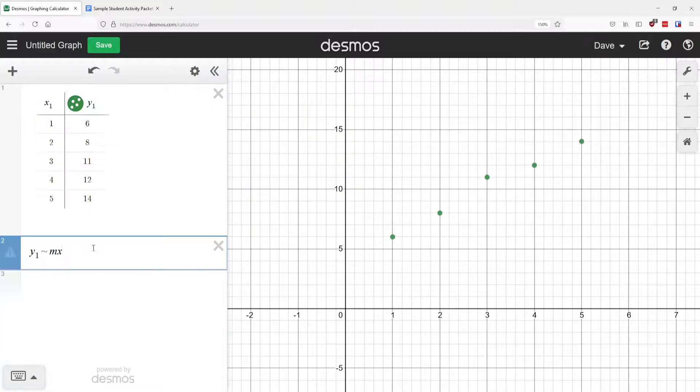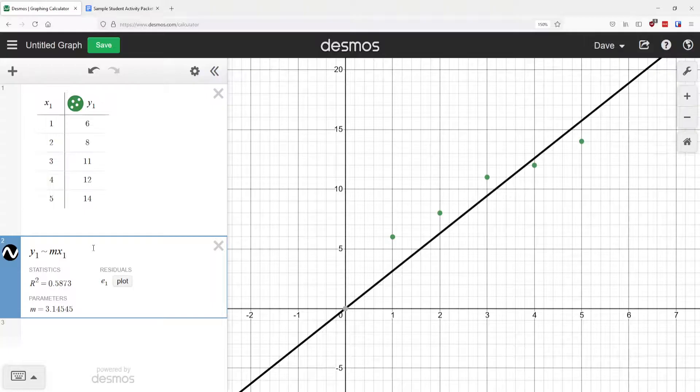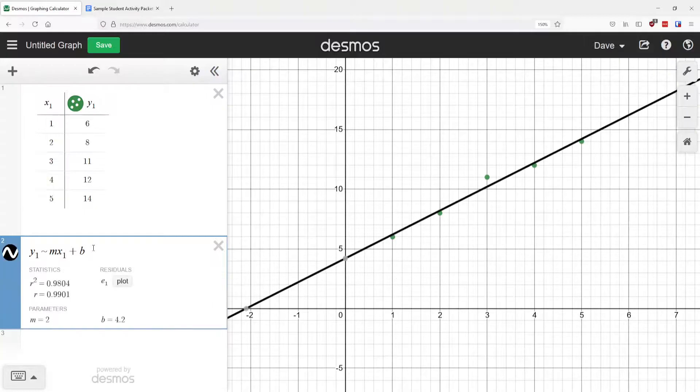And then it's M X one. Again, I just type one. I didn't have to figure out how to push it down. It did that automatically plus B. So I typed in this formula Y one.